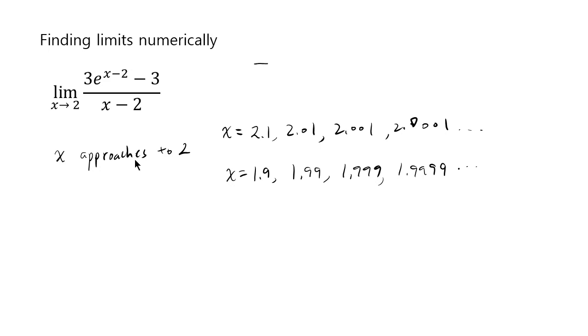And it doesn't have to be these numbers. It could be like 2.1 and 2.02, 2.003, 2.0004, some other number. All I'm trying to say is that there are two kinds of approaching 2, which is one is you could approach 2 from the right.